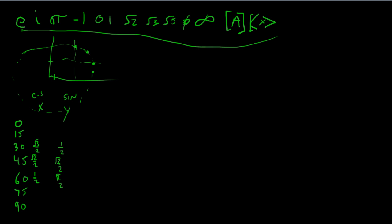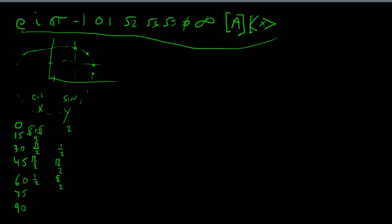There are lots of other ways to get this, but remembering at 15 degrees the x is more than the y, and the pattern is 2, 4, 6 with square roots and a minus. Then at 0 degrees x is 1 and y is 0, and for 90 degrees x is 0 and y is 1. This pattern shifts when you cross the line of symmetry at 45 degrees — you have these numbers reversed.